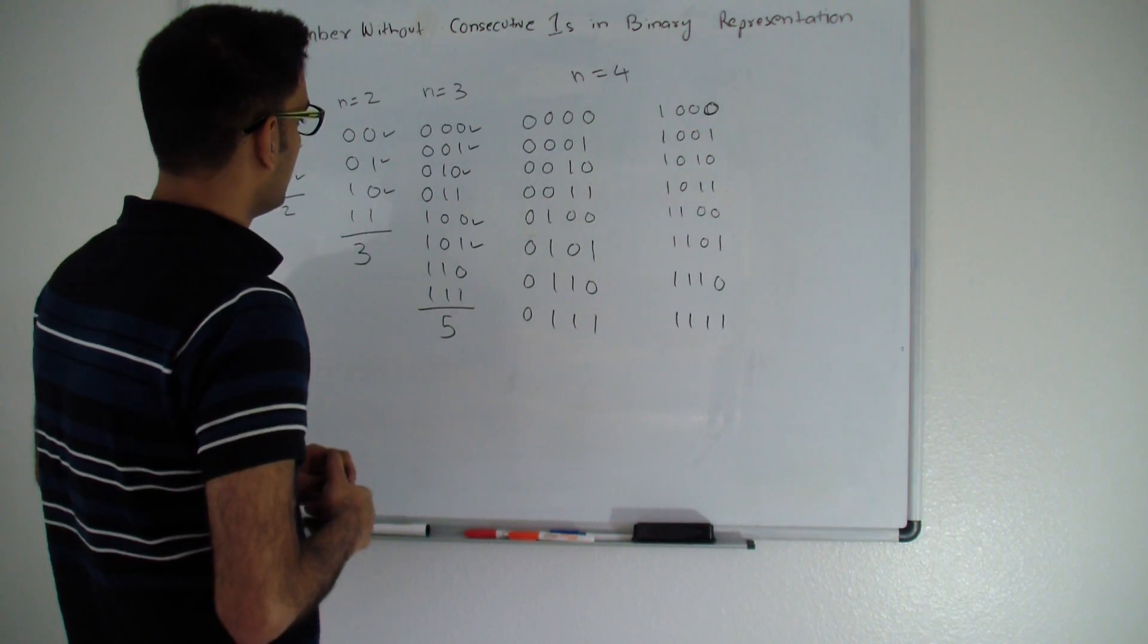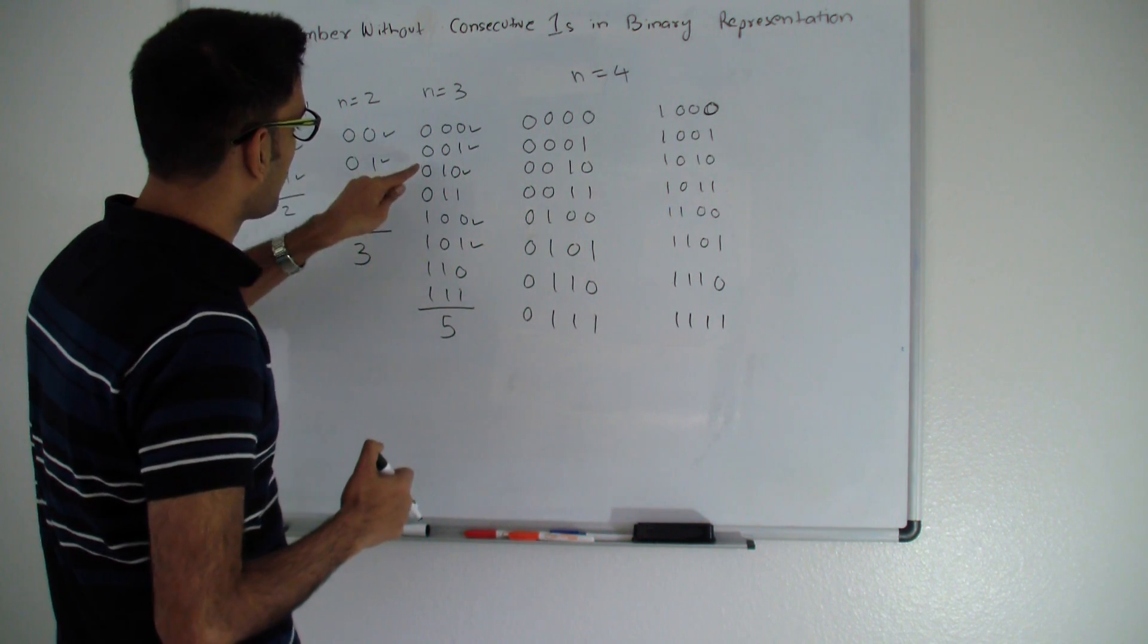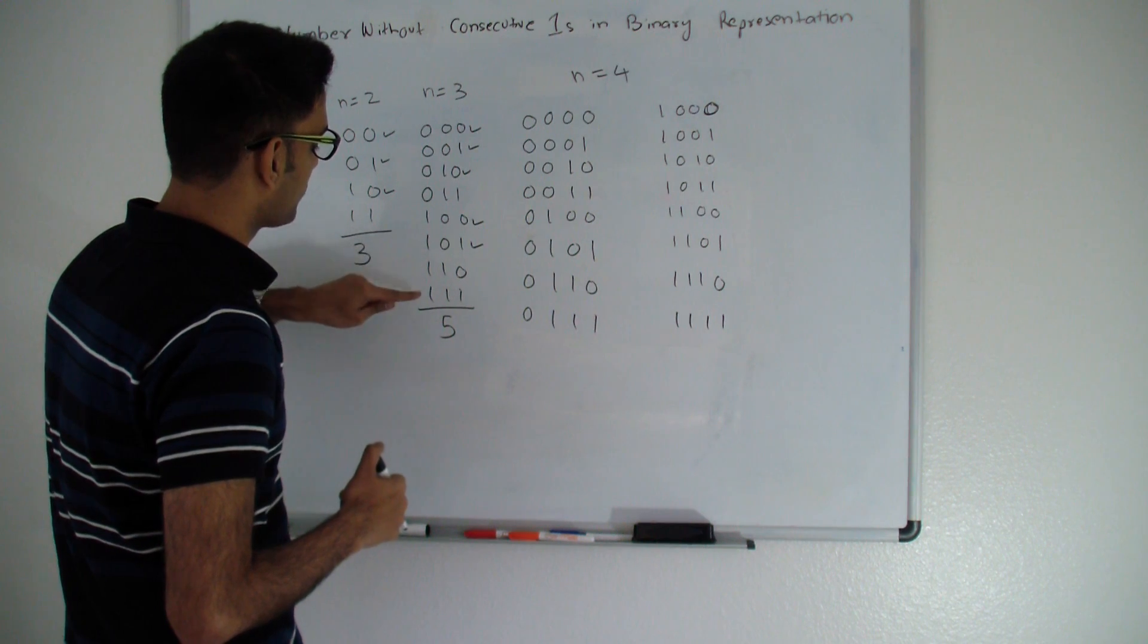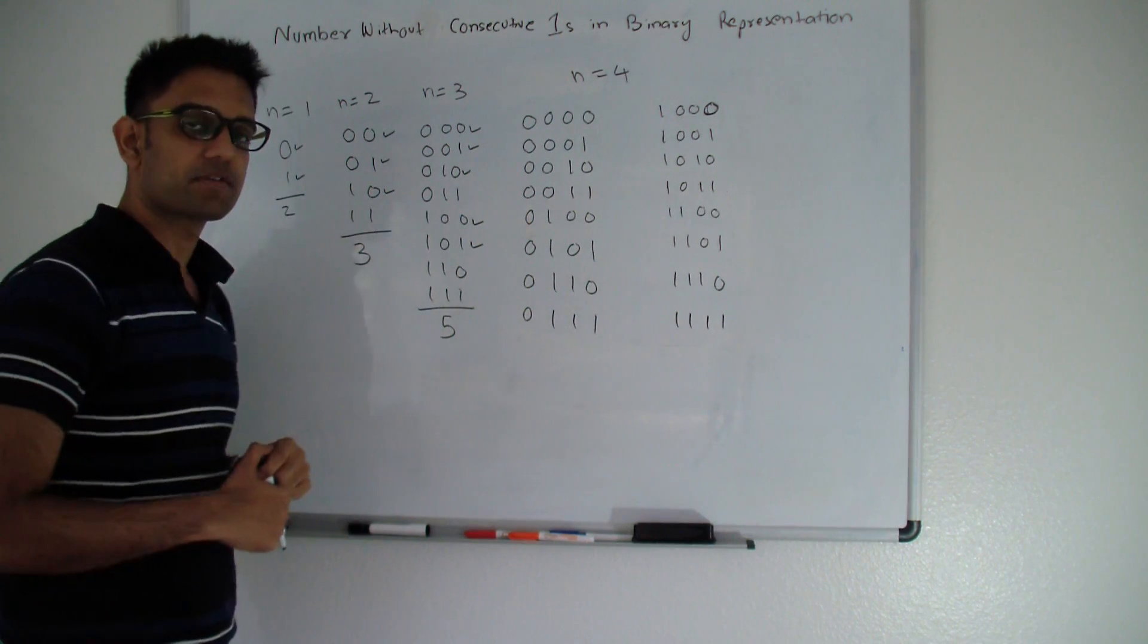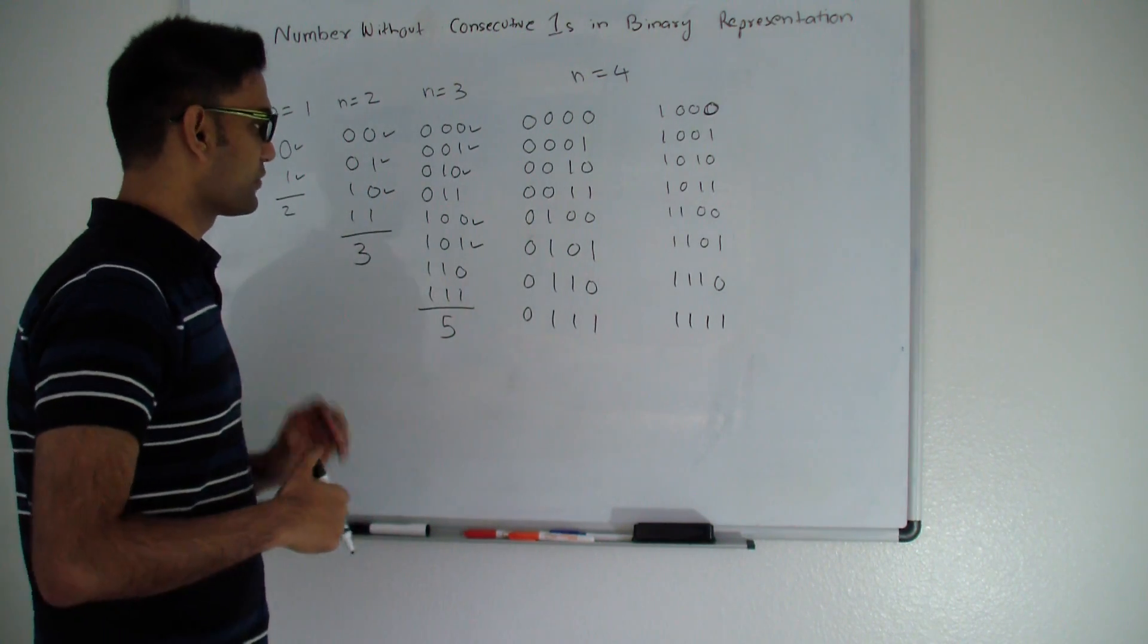Let's see n equals 3. Here we have 5 numbers who do not have consecutive ones in their binary representation, while the other 3 numbers 0,1,1, 1,1,0, and 1,1,1 do have consecutive ones. So when n equals 3, you should return 5.